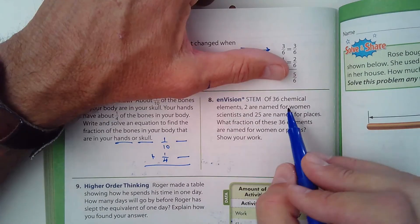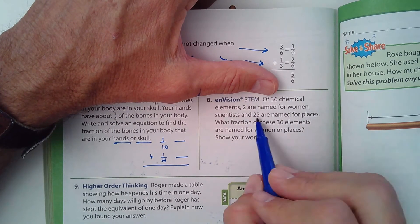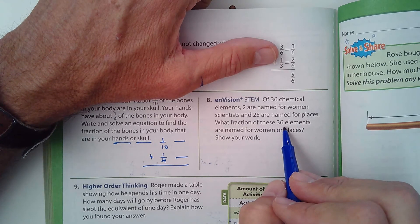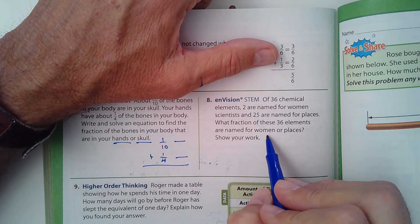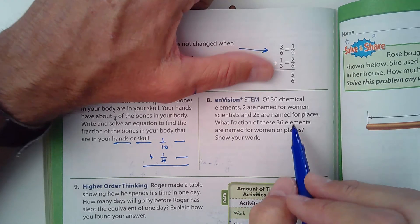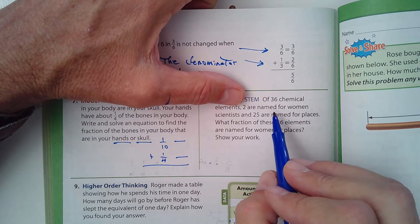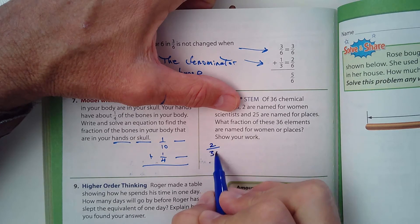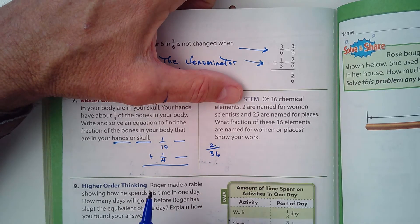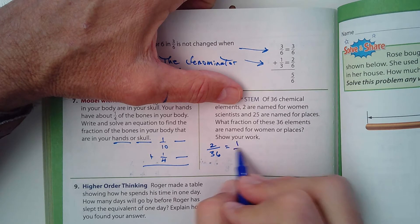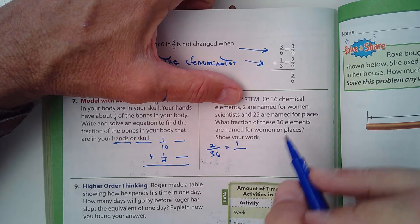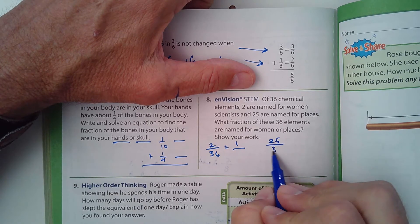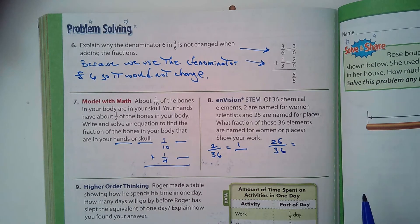Number 8: Of 36 chemical elements, 2 are named for women scientists and 25 are named for places. What fraction of these 36 elements are named for women or places? Well, first off, for women it's going to be 2 out of 36, which you can reduce to 1 over—I'll let you figure that one out. And then 25 over 36 for places—that one cannot be reduced.